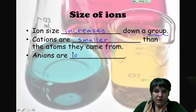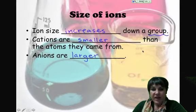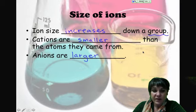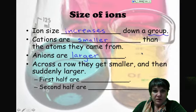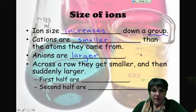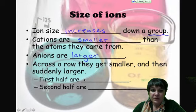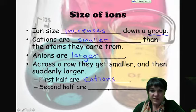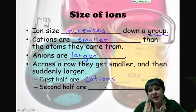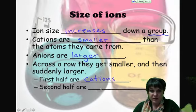Cations are going to be smaller though than the atoms they are formed from because when they lose electrons, they get rid of that outside valence shell and drop down into a smaller orbital. Anions though are larger because they gain the electrons without adding any more protons to hold onto them.